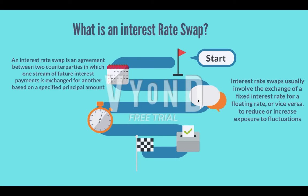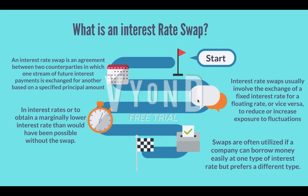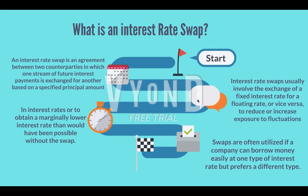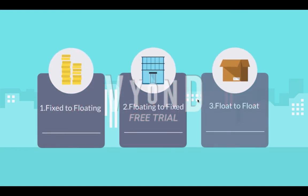Interest rate swaps usually involve the exchange of a fixed interest rate for a floating rate, or vice versa, to reduce or increase exposure to fluctuations in interest rates, or to obtain a marginally lower interest rate than would have been possible without the swap. Swaps are often utilized if a company can borrow money easily at one type of interest rate but prefers a different type.